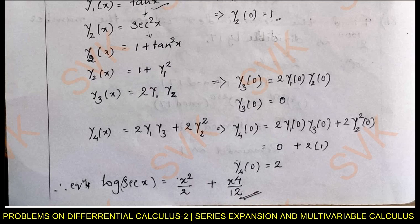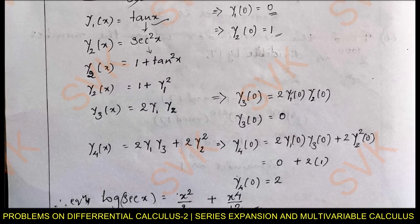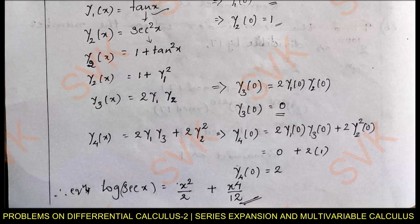Now, differentiating y₂ to get y₃: derivative of 1 is 0, derivative of y₁² is 2y₁·y₂. Putting x = 0, y₃(0) = 2·y₁(0)·y₂(0) = 2·0·1 = 0. For y₄: differentiating using the product rule gives 2y₁·y₃ + 2y₂². Putting x = 0, y₄(0) = 2·y₁(0)·y₃(0) + 2·y₂(0)² = 0 + 2·1 = 2.